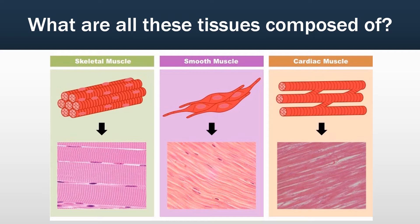Good morning everybody, welcome back to class. I hope everyone's been doing well since last time we met. I have an activity plan to start off our lesson. If you could direct your attention to the screens, I would like you to take a look at the three types of tissues I have displayed here — skeletal, smooth, and cardiac muscle tissues. I want you to think of the cellular biology levels of organization we talked about last class, and tell me what level of organization is directly under tissue. What composes tissue? What's the smaller piece that makes this bigger piece? I'll give you a moment to think about it, discuss among yourselves, and we'll come back in just a minute.